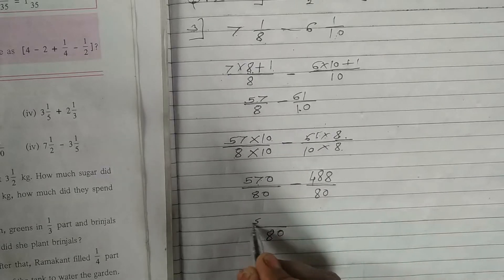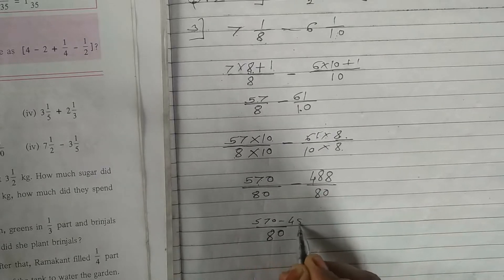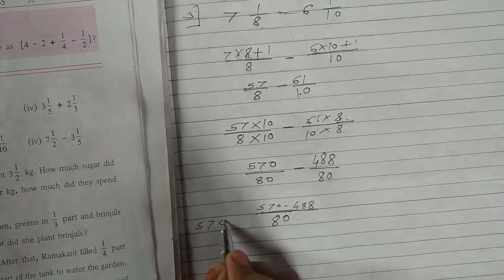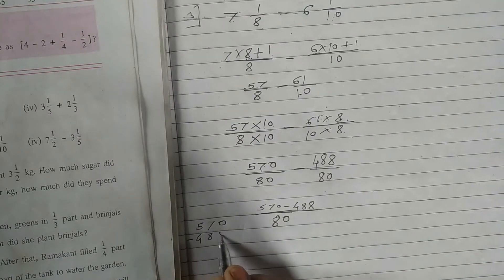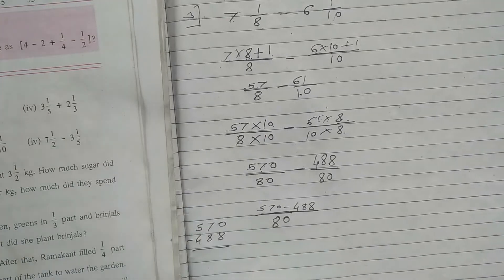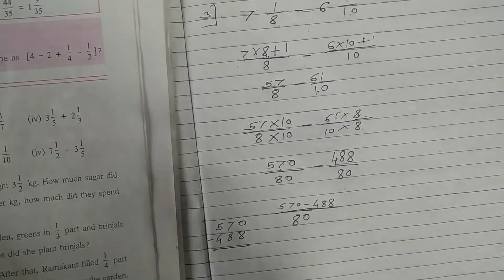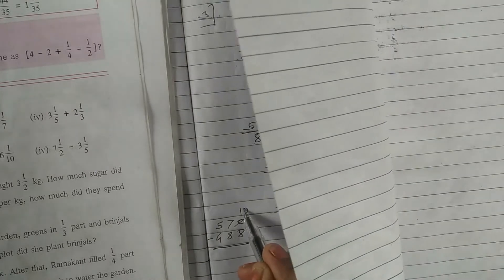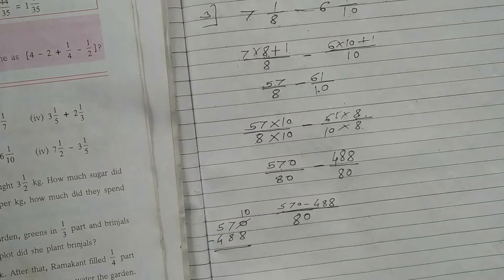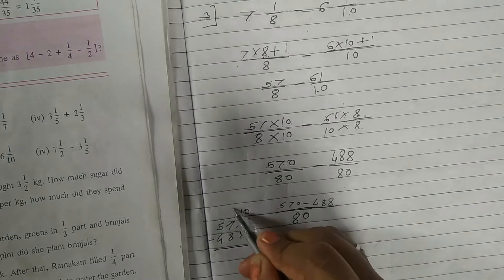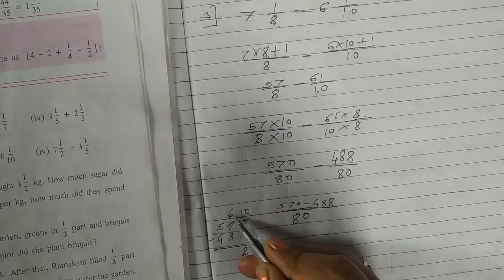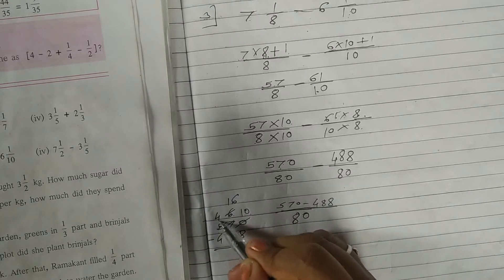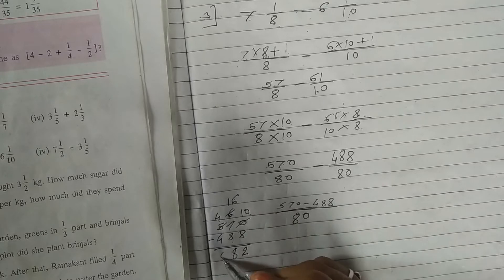570 minus 488. This you can arrange on rough page for subtraction or on the same page no matter. Here 0 minus 8 not possible. So this become 10 and 7 become 6. 10 minus 8, 2. 6 minus 8 again not possible. So this become 16, this become 4. 16 minus 8 is 8. 4 minus 4, 0.